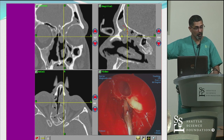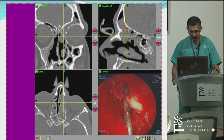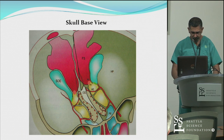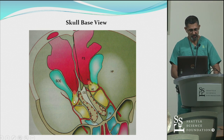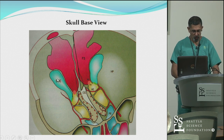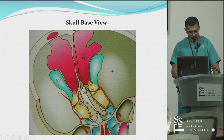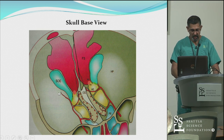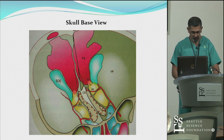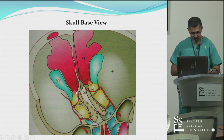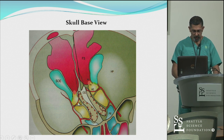This is a very nice example where the guide wire can find that tract for you if you know where to introduce it. Another example: that suprabullar cell, when it pneumatizes anterior and lateral into the orbital process of the frontal bone, becomes a supraorbital ethmoid cell. That cell is going to open posterior and lateral to the frontal outflow tract proper, which is therefore anterior and medial.